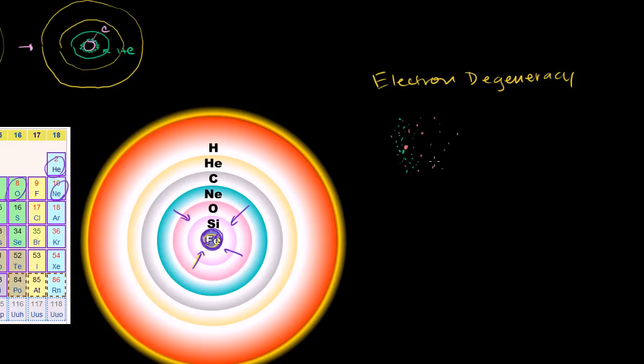And electron degeneracy pressure is essentially what it's saying. These electrons don't want to be in the same place at the same time. I won't go into the quantum mechanics of it. But they cannot be squeezed into each other anymore. So that, at least temporarily, holds this thing from collapsing even further.